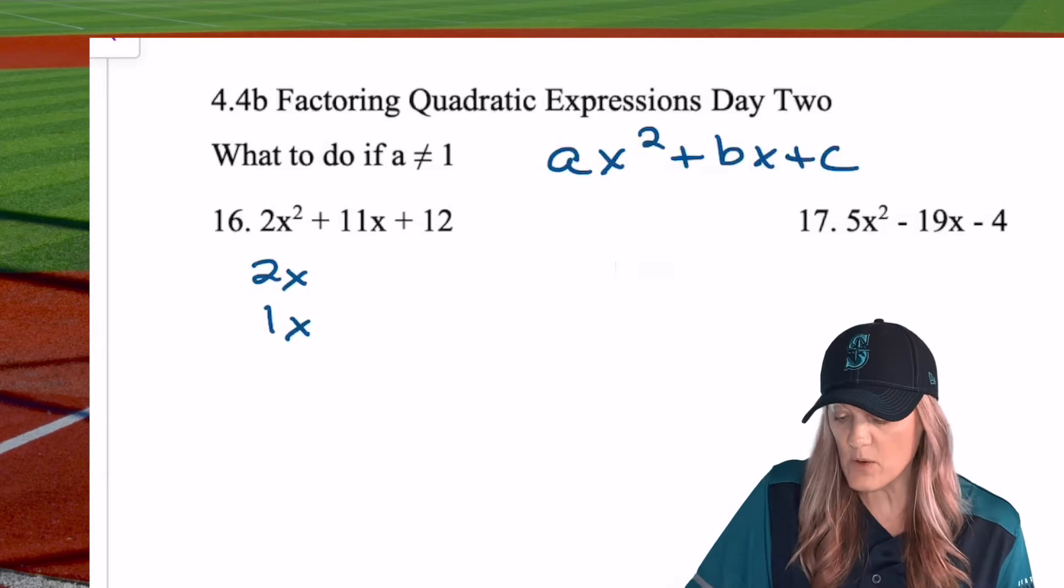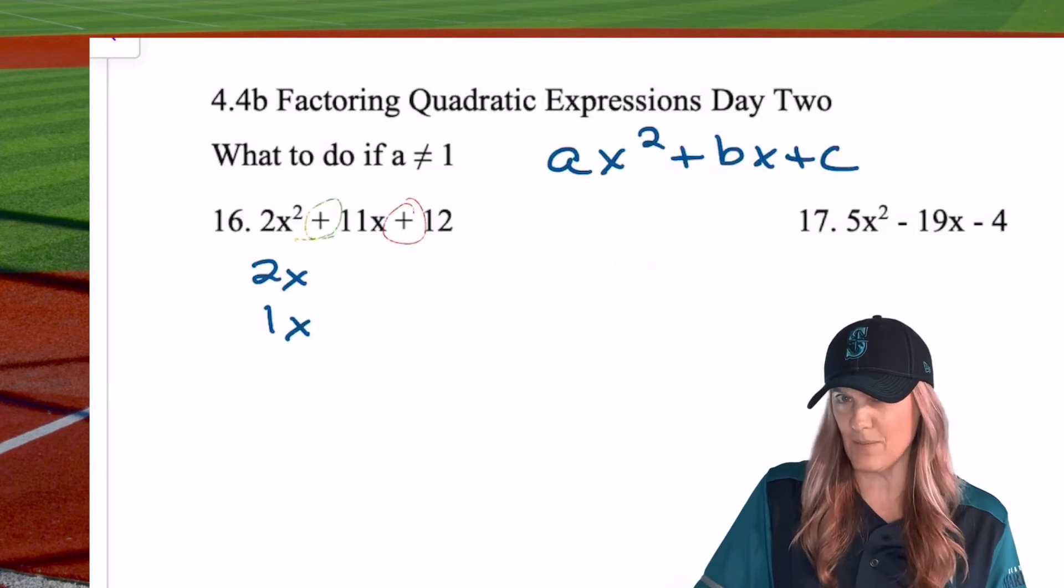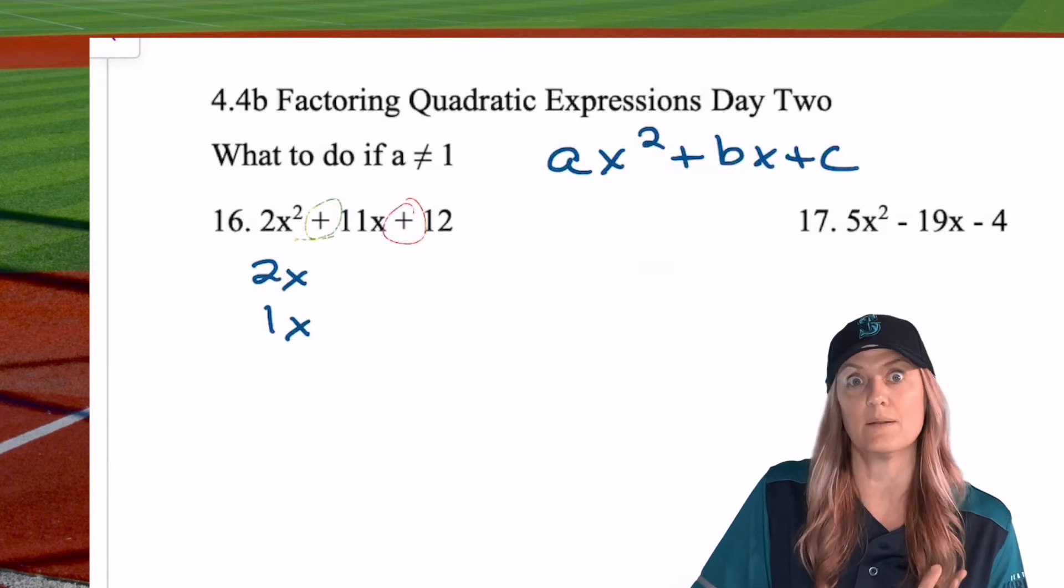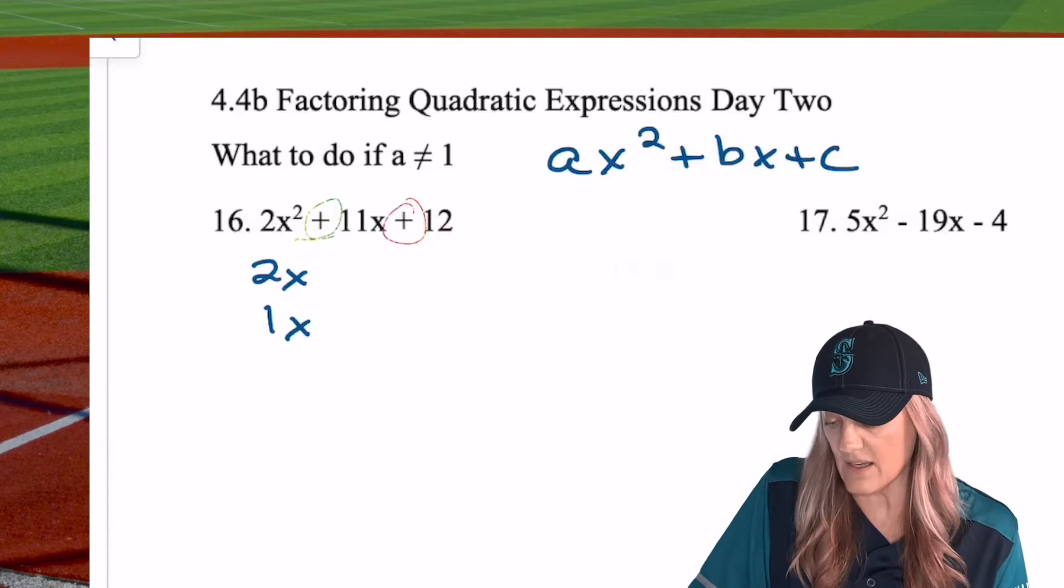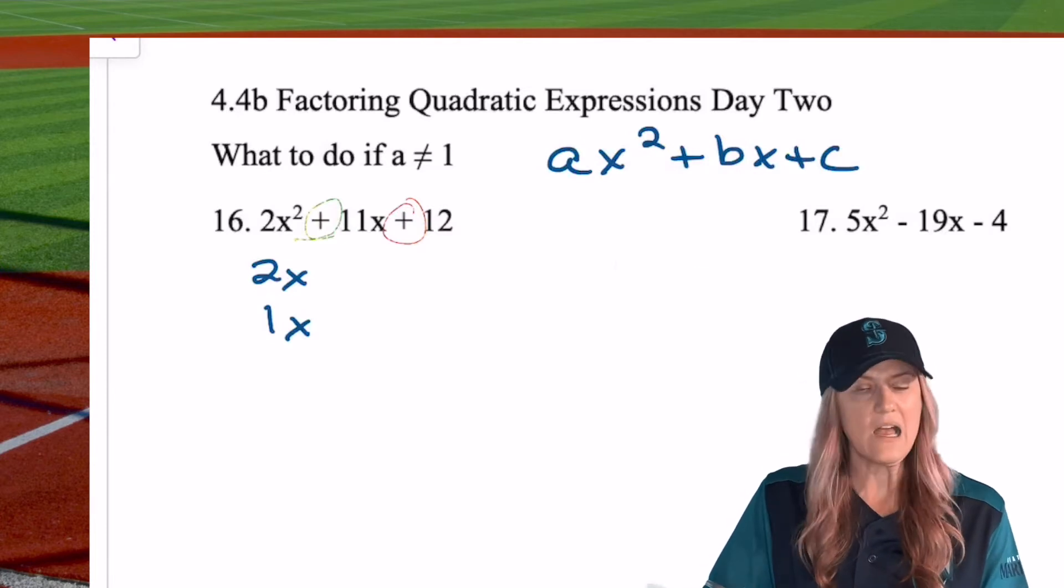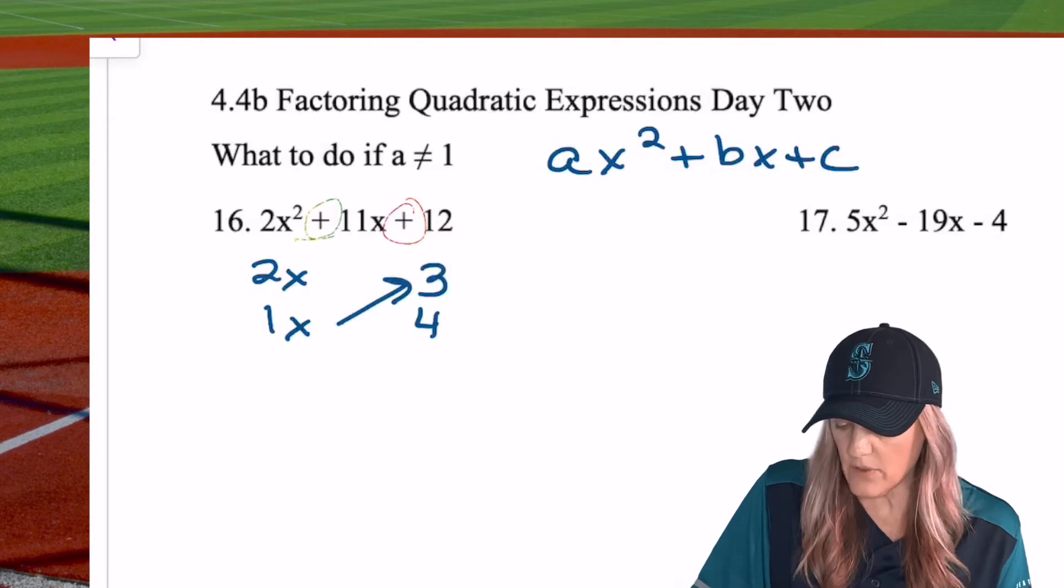One cool thing though, is notice that we have this plus and plus. So do we already know what the signs are going to be? Of course we do. Plus and plus, right? C is positive. The signs have to match. All right! Let's go ahead and give it a shot. I'm just going to randomly pick 3 and 4 and see what we get. So here we go. 3, 2, 2, 2, 8.